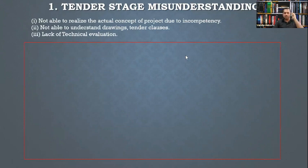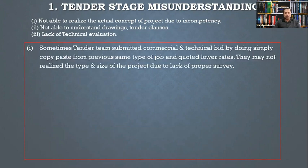Tender stage misunderstanding means not being able to realize the actual concept of the project due to incompetency — not able to understand the drawings, tender clauses, or perform a proper technical evaluation. These gaps create serious downstream problems during execution.